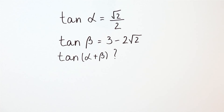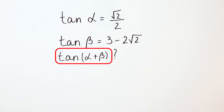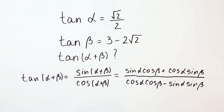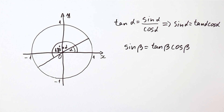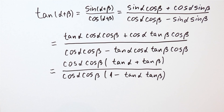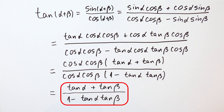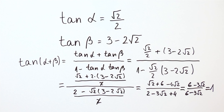We started with a problem where we were given the tangent of alpha and the tangent of beta and needed to find the tangent of alpha plus beta. We saw that we can express the tangent of alpha plus beta if we know the sines and cosines of alpha and beta. However, since we didn't know them, we expressed the sine as the tangent times the cosine. Putting that into our expression, the cosines cancelled out, leaving us with the formula for the tangent of alpha plus beta in terms of the tangent of alpha and the tangent of beta. Finally, we used that formula to solve our initial problem.